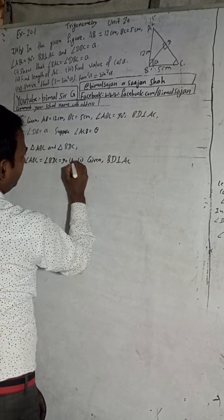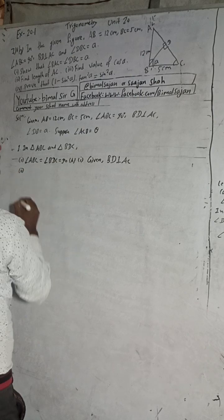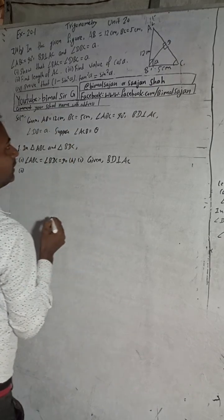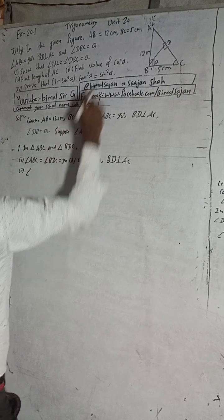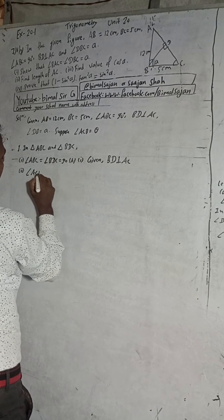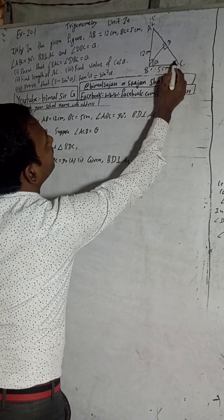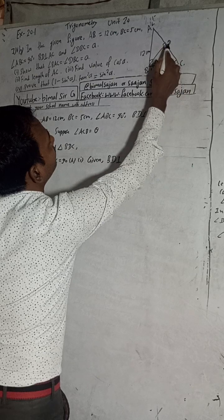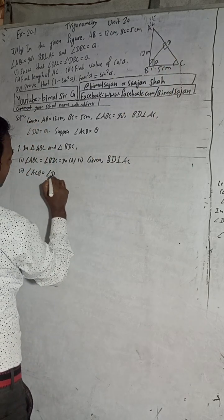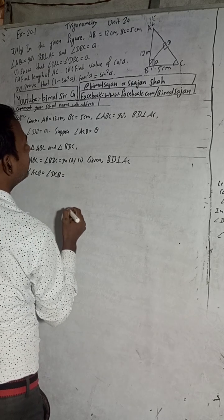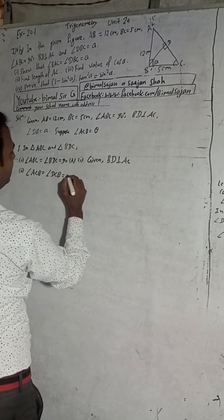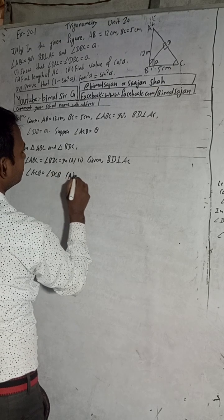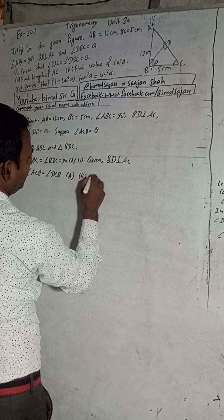So we got one angle. Now for the second angle: angle ACB is equal to angle DCB — this is the common angle, because it is the same angle shared by the bigger triangle ABC and the smaller triangle DBC. We supposed this angle to be theta, so angle DCB equals theta. That is our second reason: common angle.